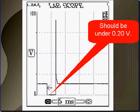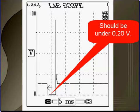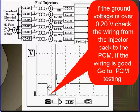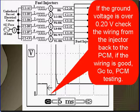Now we're going to study where the injector is turned on — the PCM turns the injector on. It should be under two-tenths of a volt because the PCM supplies a ground for the injectors to turn it on. If the ground voltage is over two-tenths of a volt, check the wiring from the injector back to the PCM. If the wiring is good, go to PCM testing.